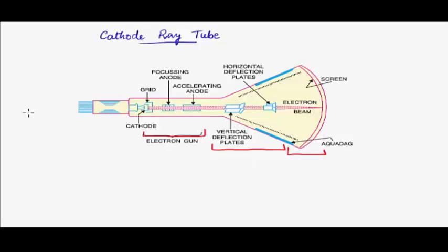We will see each part one by one, beginning with the electron gun. In the electron gun, we have a filament which is connected to a low tension battery of around 6 volts. This filament gets heated up and it heats the cathode, so the cathode is heated indirectly.